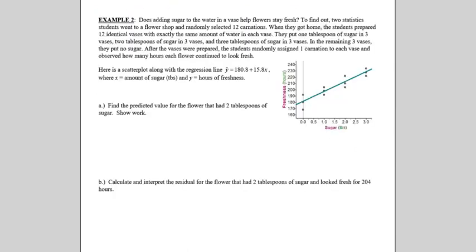One more example. So, this one says, does having sugar to water in plants make it last longer? So, two students went and bought some carnations. And then they put in tablespoons of sugar in three vases. Two tablespoons in three vases. And three tablespoons in three vases. To see what it did to the flower. If it made it last longer or not. So, here's our formula. Y hat equals 180.8 plus 15.8x. Where x is the amount of sugar. And y is the hours of freshness.